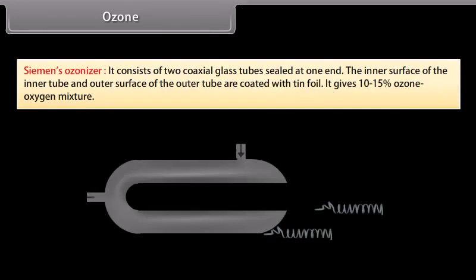Siemens ozonizer: It consists of two coaxial glass tubes sealed at one end. The inner surface of the inner tube and outer surface of the outer tube are coated with tin foil. It gives 10-15% ozone oxygen mixture.